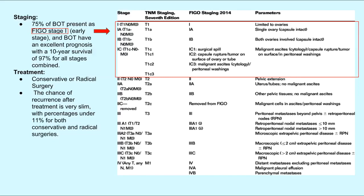Surgical resection is often the only treatment necessary. Conservative surgeries attempt to preserve fertility, while radical surgeries remove both ovaries. Recurrence after surgery is rare.